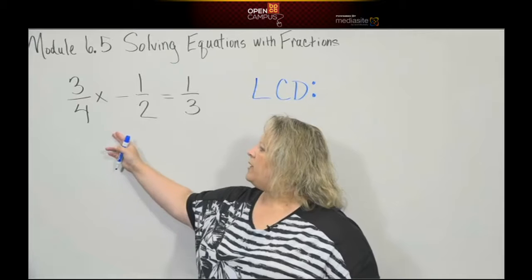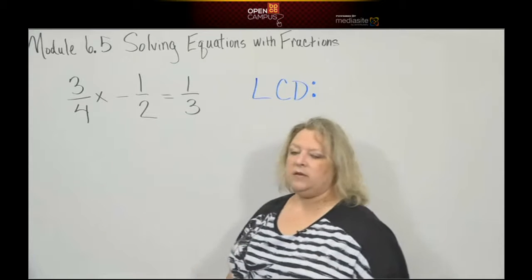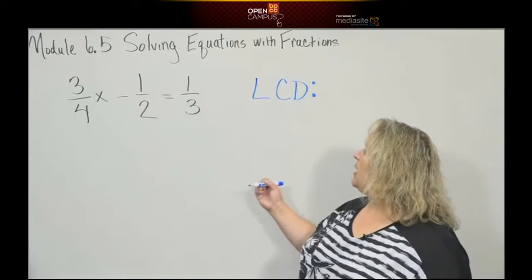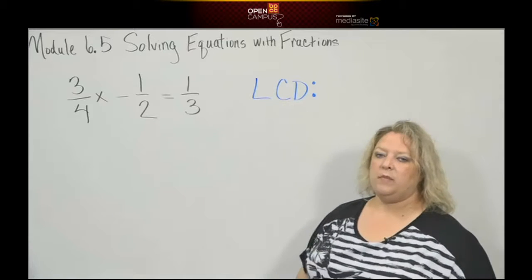So, our first problem, three-fourths x minus one-half is equal to one-third. The first thing that I want to do is find a least common denominator.